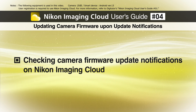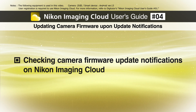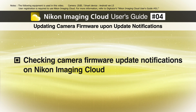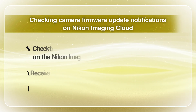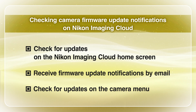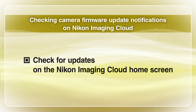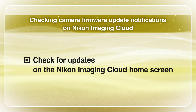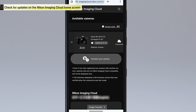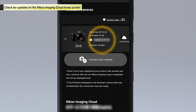First, we will go over how to check camera firmware update notifications on Nikon Imaging Cloud. As shown here, there are three ways to check for camera firmware update notifications. The Update button will appear in the available camera list on the home screen when a new firmware update for a camera using Nikon Imaging Cloud is available.